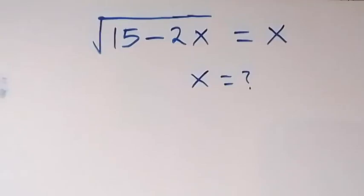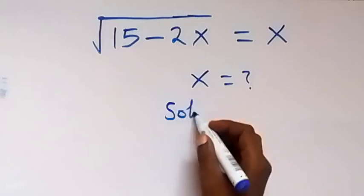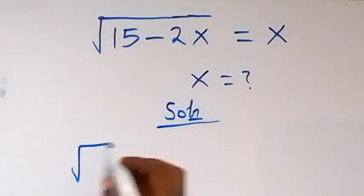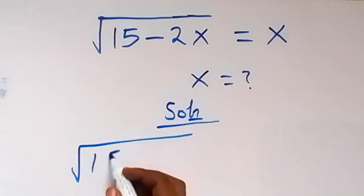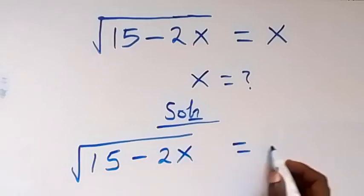Hello, you are welcome. How to solve for x in this nice square root problem. What is given is square root of 15 minus 2x equals to x.